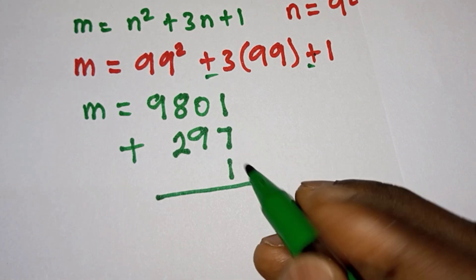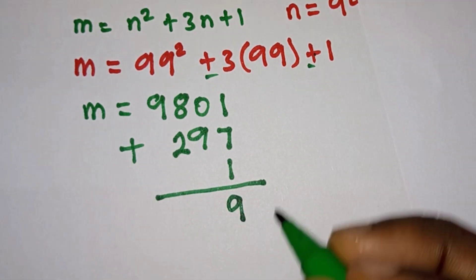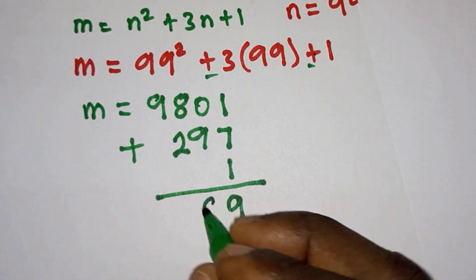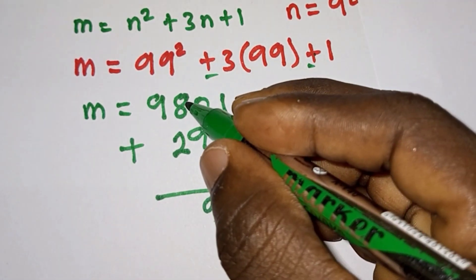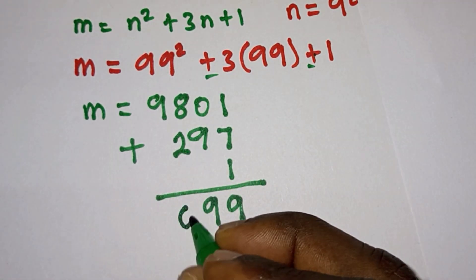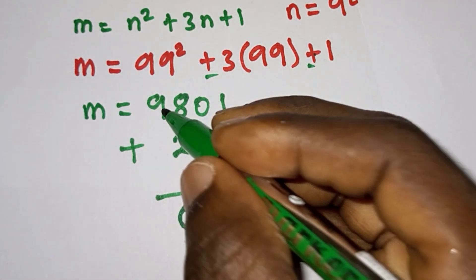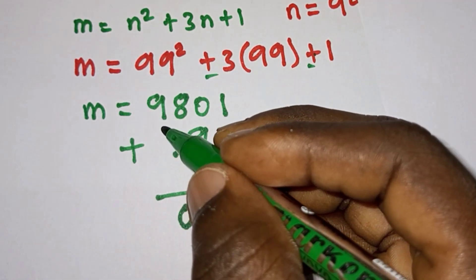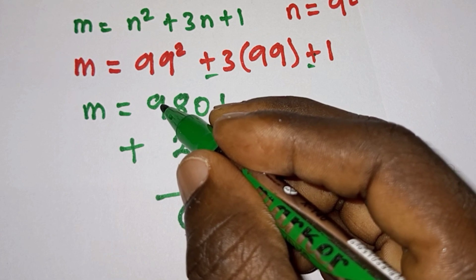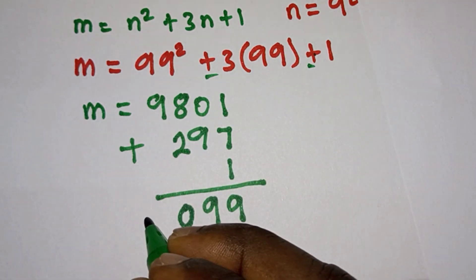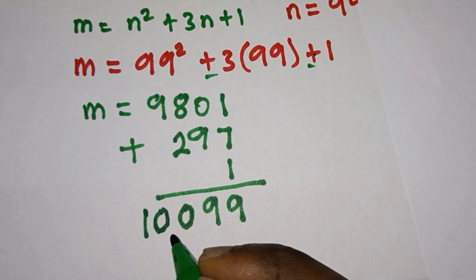1 + 7 + 1, that is obviously 9. Then 0 + 9 which is also 9. Then 8 + 2, that is 10, we're gonna write 0 remainder 1. Then 9 plus nothing is here so we still have 9, then plus the remainder which is 1 making 10. So we're gonna have 10 here. So in all we are getting 10,099 as our final answer.